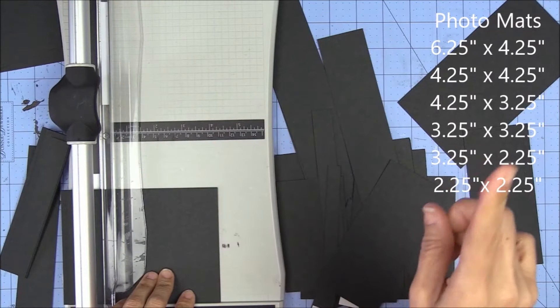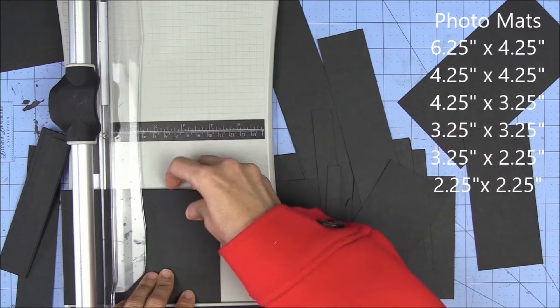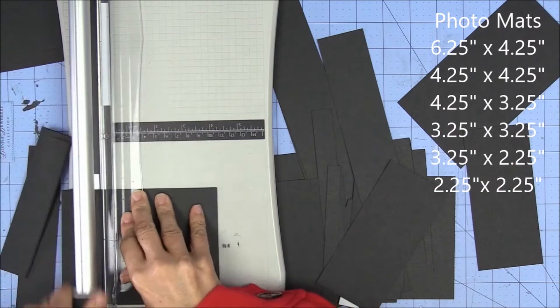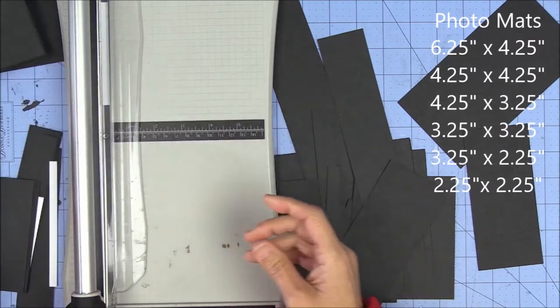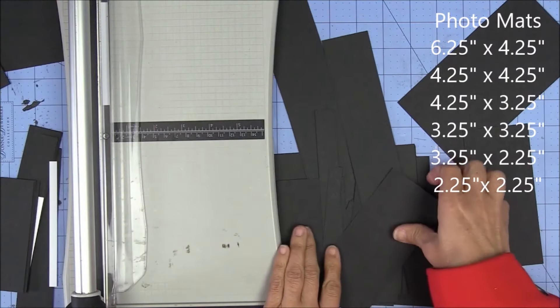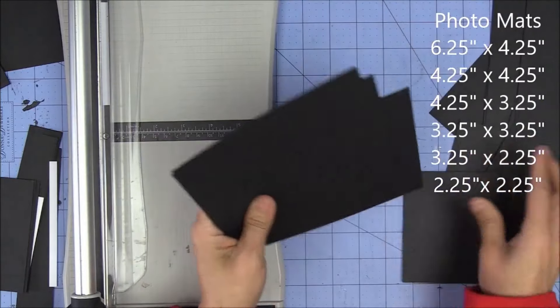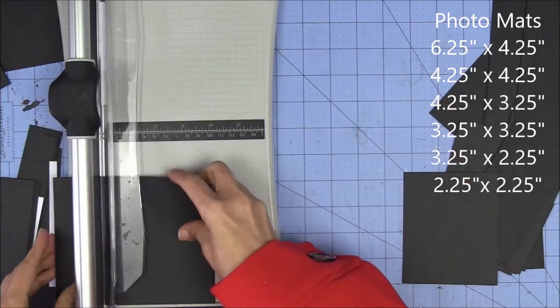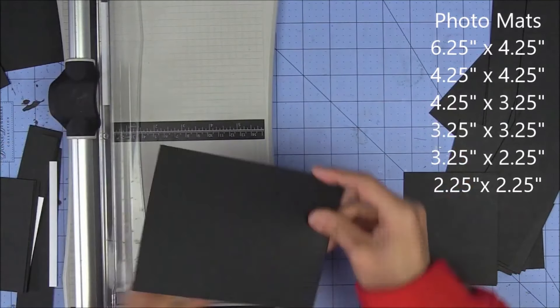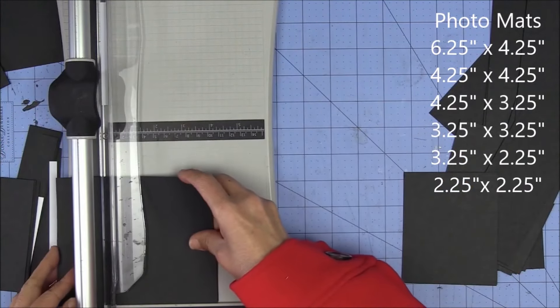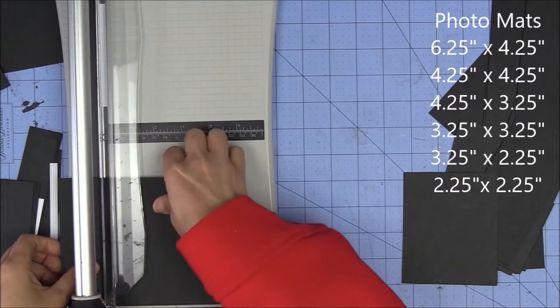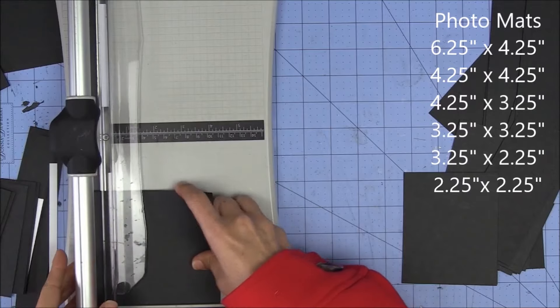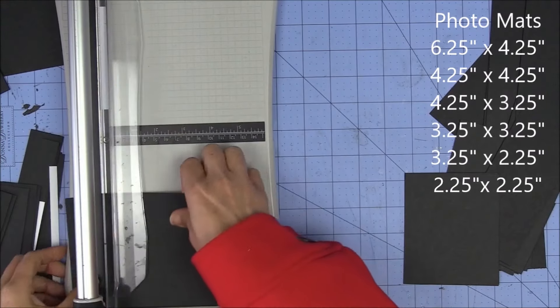Again, these measurements are right up here, so don't worry, you don't have to rush or pause to write these down. You can always rewind. Okay, so 4 and a quarter by 4 and a quarter. Then I look to see what else can I do. I get my 4 and a quarter by 4 and a quarter again. So I've got this stack. I can get my 4 and a quarters by 4 and a quarters from here.